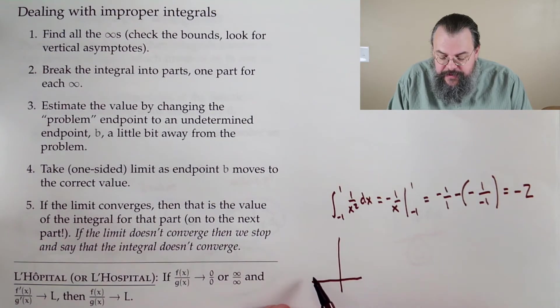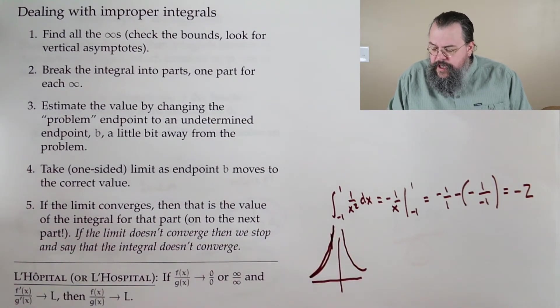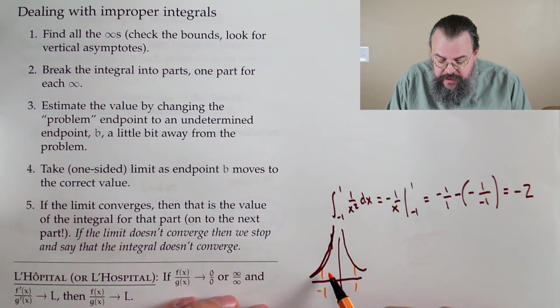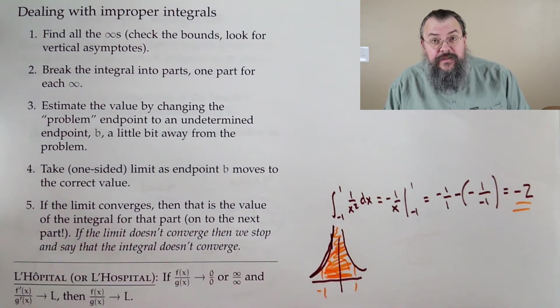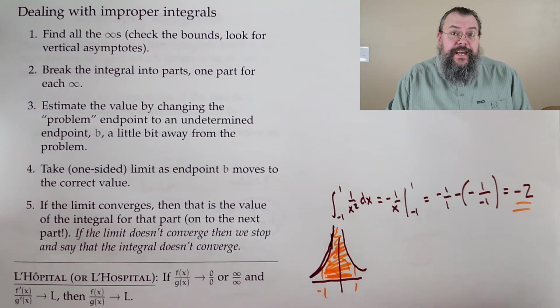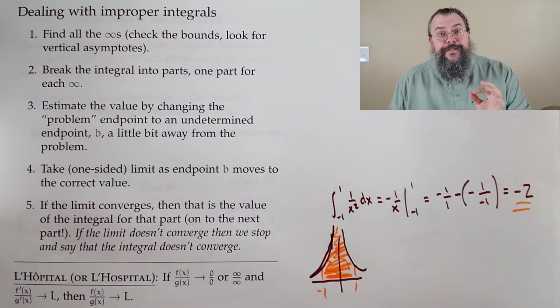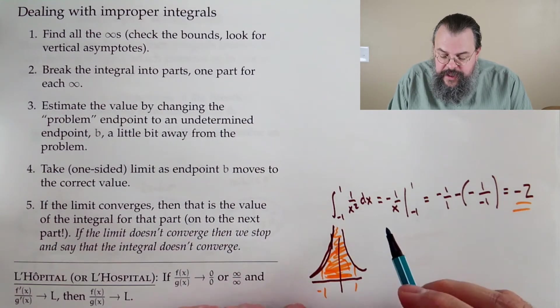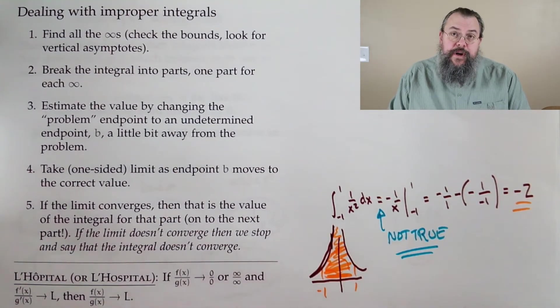If you graph the function 1 over x squared, the function is never negative. Now we're going from negative 1 to positive 1 and saying all this area here, the total area is somehow negative 2? How is it that when we find this integral that should have a positive answer, we get a negative answer out? That's a good question. The problem is we weren't careful. If you don't pay attention, you get weird stuff happening. This part right here is not true.